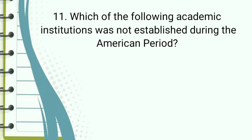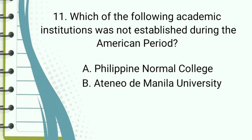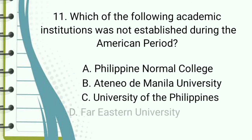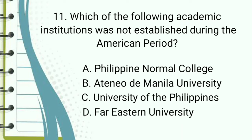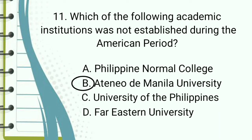Which of the following academic institutions was NOT established during the American period? a. Philippine Normal College, b. Ateneo de Manila University, c. University of the Philippines, d. Far Eastern University. Correct answer: Letter B.